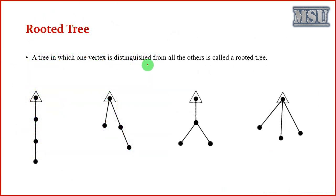A tree in which one vertex is distinguished from all the other vertices is called a rooted tree. These are examples of a rooted tree. The main purpose of this rooted tree is that it acts as a starting vertex. You can start from the root tree. That's what we are calling it a rooted tree.